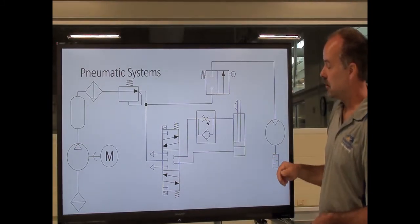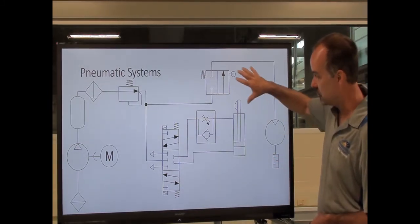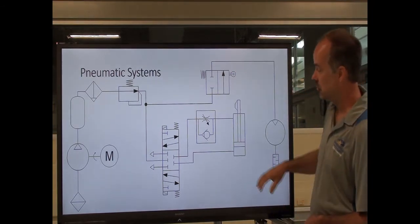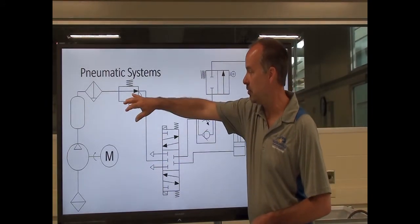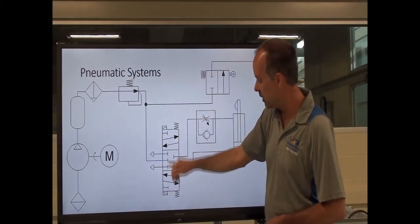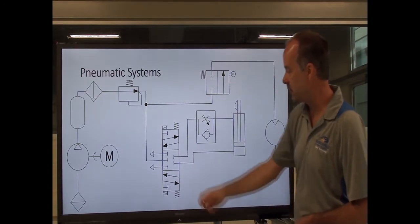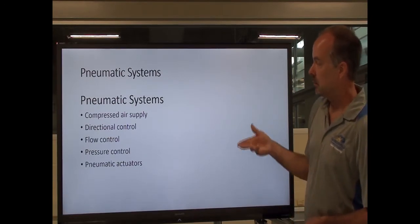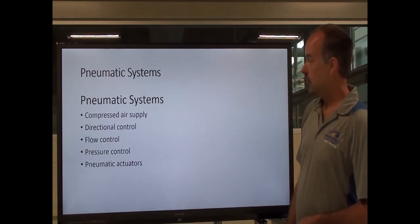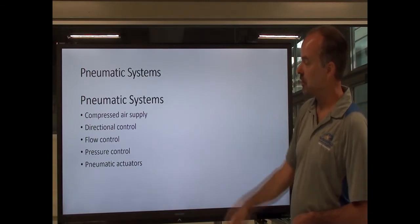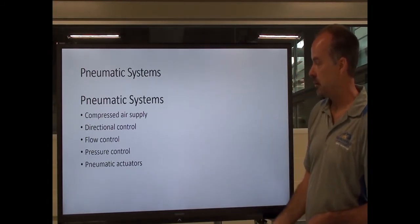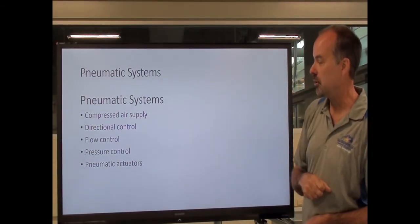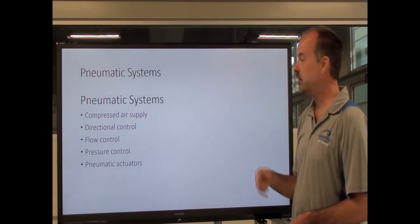Overall, the operation would be similar. The schematic symbols are very similar to hydraulic, but with just a few minor differences. Instead of a relief valve, we use a pressure reducing valve. And my four-way DCV is a five-port valve, whereas in the hydraulic system it was a four-port. For the rest of this presentation, we're going to look at how compressed air is generated, directional control in a pneumatic system, flow control, pressure control, and pneumatic actuators.